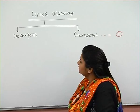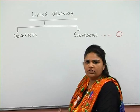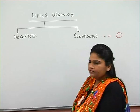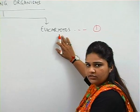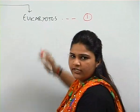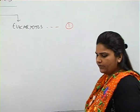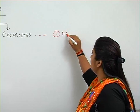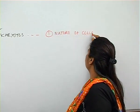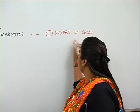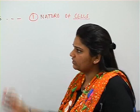A prokaryotic cell is a cell which has a primitive nucleus — an old type of nucleus — whereas a eukaryotic cell has a true nucleus. We have already learnt about prokaryotic and eukaryotic cells in the previous chapter. So the first step is based on the nature or types of cells. This is a very basic fundamental difference between these two.